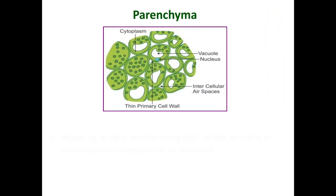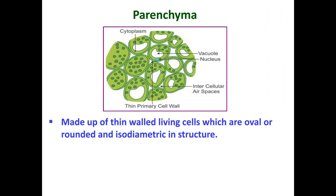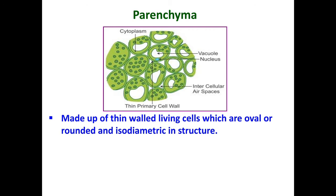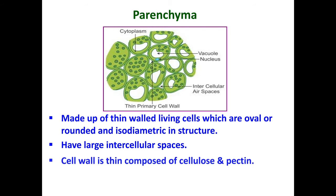Parenchyma is the fundamental tissue made up of thin-walled cells. From the diagram of parenchyma tissue, you can see that cells of parenchyma are oval or rounded and are isodiametric in structure, meaning they have the same diameter. These parenchyma cells are loosely packed and thus have large intercellular spaces.